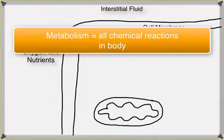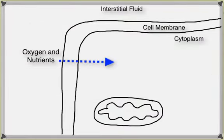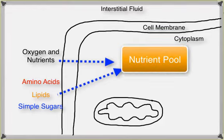The term metabolism refers to all the chemical reactions that occur in an organism. Chemical reactions within cells are called cellular metabolism. Cellular metabolism provides the energy needed to maintain homeostasis. The cell absorbs organic molecules — amino acids, lipids, and simple sugars — from the surrounding interstitial fluids. These cross the cell membrane and join nutrients already in the cytoplasm, forming a nutrient pool the cell can use to provide energy and create new intracellular components.